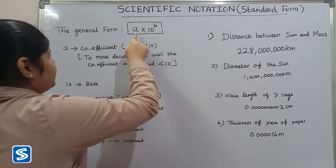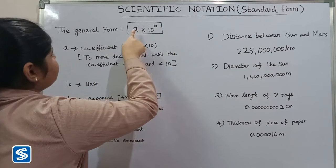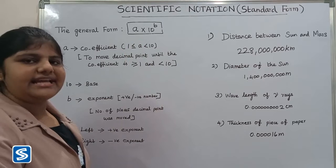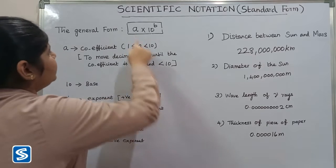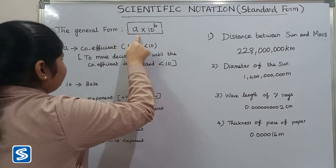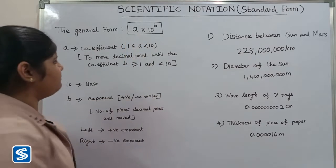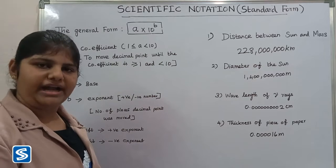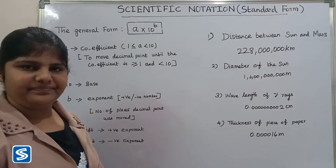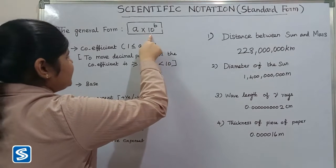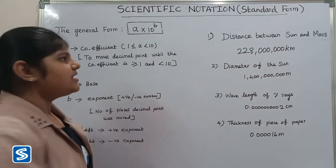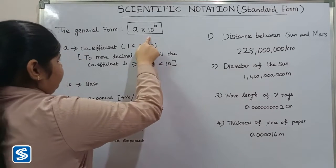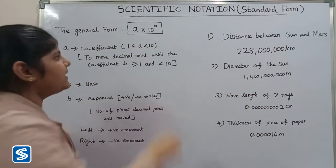The general form of scientific notation is a multiplied by 10 to the power of b. Here, a is the coefficient. The value of a is greater than or equal to 1 and less than 10. To find the value of a, we move the decimal point until the coefficient is greater than or equal to 1 and less than 10. The base in scientific notation is always 10.